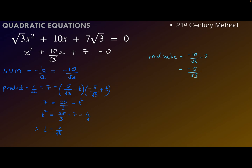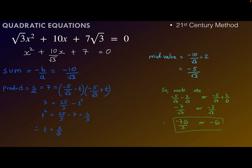The roots are equidistant from the mid value by t, so the roots are -5/√3 - 2/√3 or -5/√3 + 2/√3, which gives -7/√3 or -3/√3. After rationalizing the denominators we get the roots as -7√3/3 or -√3.